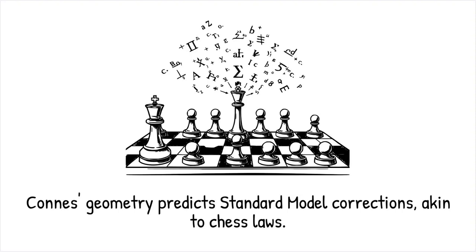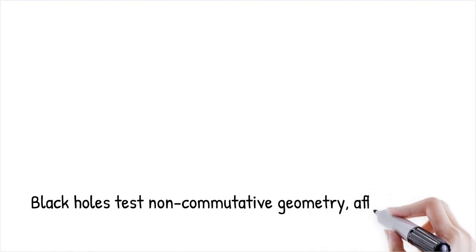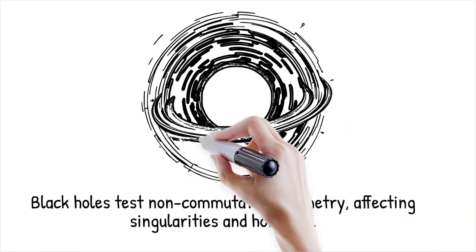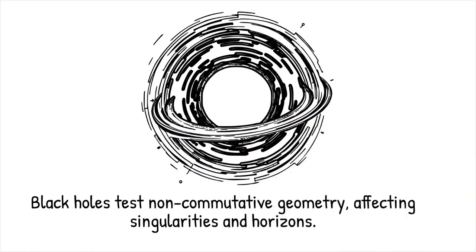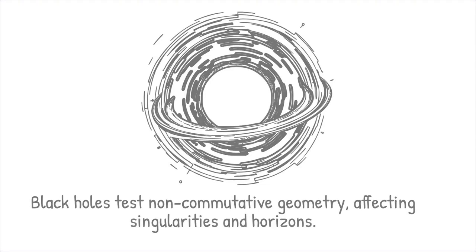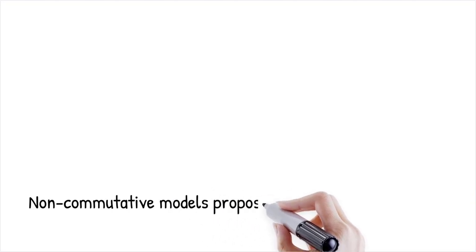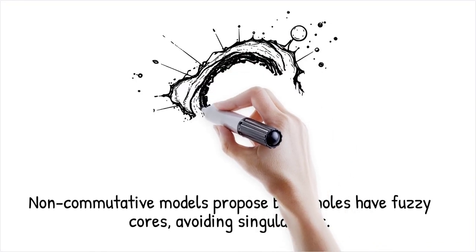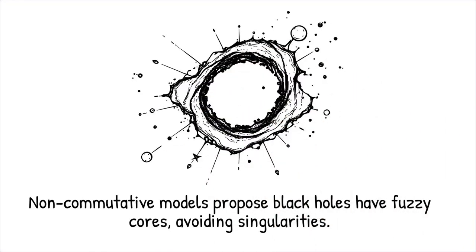Black holes provide an extreme environment where quantum mechanics and gravity interact, making them an ideal testing ground for non-commutative geometry. Some models propose that near a black hole's singularity, space itself behaves non-classically, altering predictions about event horizons and Hawking radiation. Non-commutative models suggest that black holes might have a fuzzy core rather than a true singularity, avoiding infinite density predictions. Like trying to squeeze a fluid into an infinitely small point, quantum fluctuations prevent space from collapsing completely, forcing it into a new structured form.